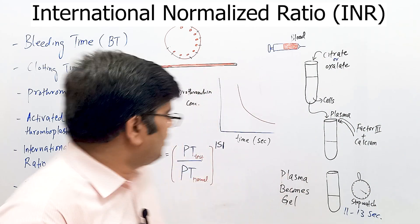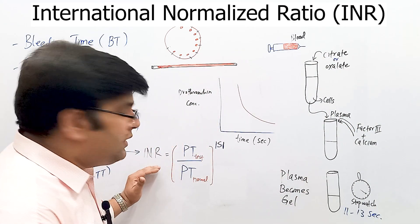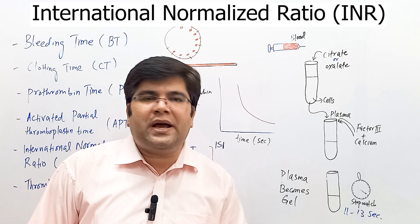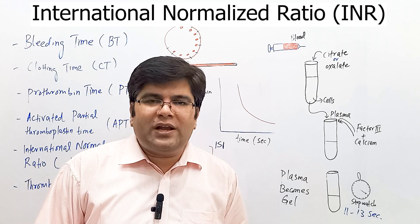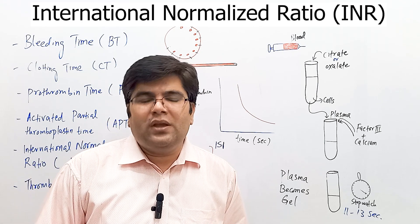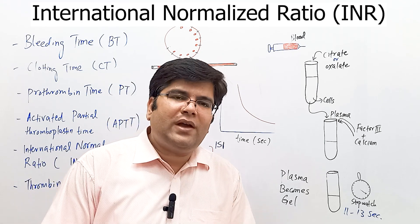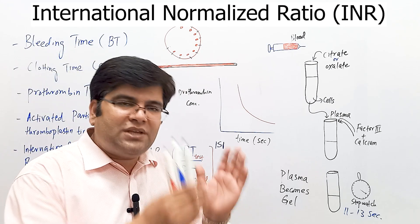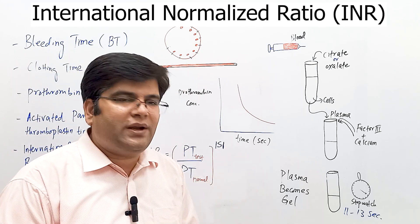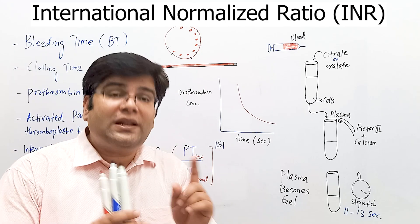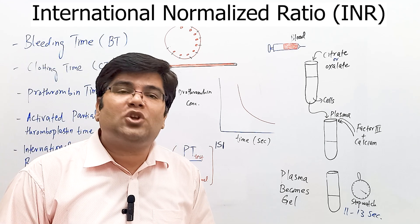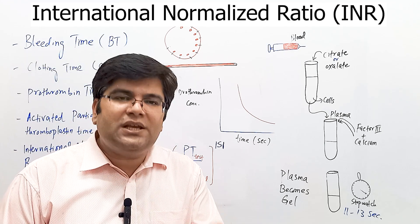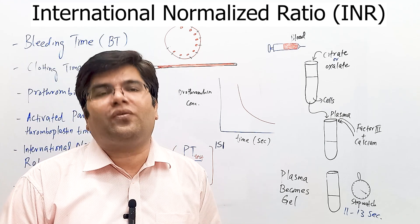The normal value of INR is between 0.9 to 1.3. A high INR — for example 4 or 5 — indicates increased risk of bleeding, while a low INR — for example 0.5 — indicates increased risk of clot formation.